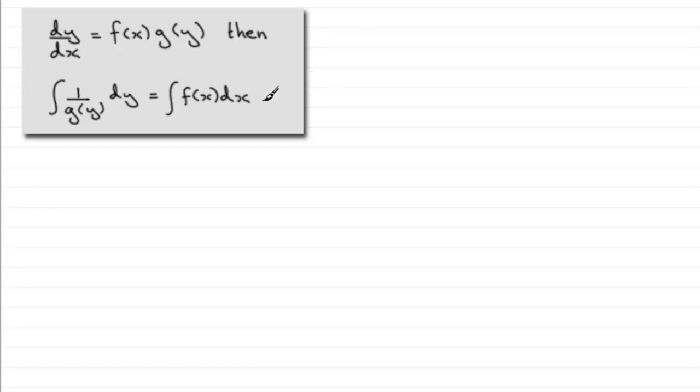Let's take an example. Let's say we have dy/dx equals minus 3y divided by x. Then if we separate the variables here, we're going to therefore have 1/y dy equals minus 3/x dx.